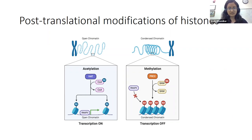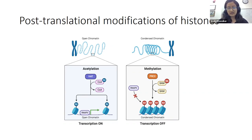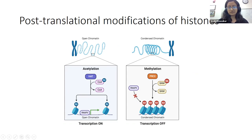Histones undergo post-translational modifications that can affect accessibility of the associated DNA to RNA polymerase. There are two major types: acetylation, carried out by histone acetyltransferases, which results in the chromatin opening up allowing access to DNA by RNA polymerase; and methylation, carried out by a methyltransferase such as PRC2, which causes the chromatin to condense, blocking access by RNA polymerase. Open chromatin is referred to as euchromatin, and condensed chromatin is referred to as heterochromatin.